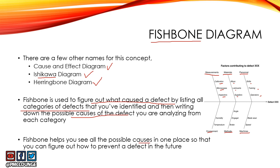The fishbone diagram helps you see all the possible causes in one place, and this will help you figure out how to prevent a defect in the future. If you're taking care of all these different categories and the different causes that you have listed here, it will help you make sure you do not get defects like these in the future — if you're acting on all the causes and categories that you have identified. That is how the fishbone diagram is used. You have the data gathered in the second step of retrospective, and now it's just a matter of putting all that data into a fishbone diagram so that your retrospective can be fruitful.